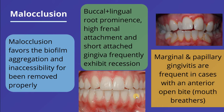Tongue thrusting is an important contributing factor in the migration and development of anterior open bite. Restorations that do not conform to the occlusal pattern of the mouth result in occlusal disharmonies that may cause excessive occlusal trauma or injury to the supporting periodontal tissue. These factors — occlusal discrepancies, root prominences, high frenal attachment, short attached gingiva, crowding, and mouth breathing — are all contributing factors in malocclusion.